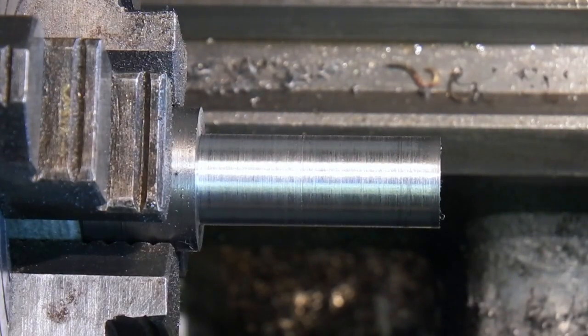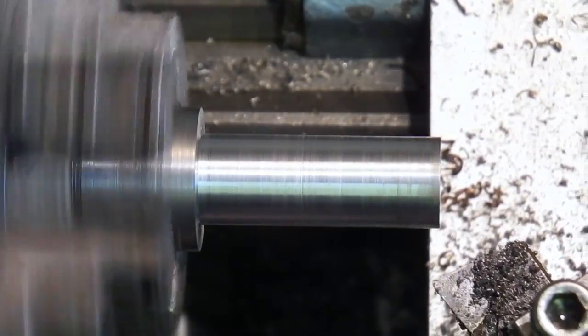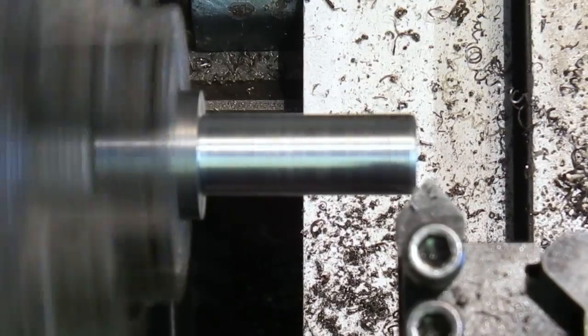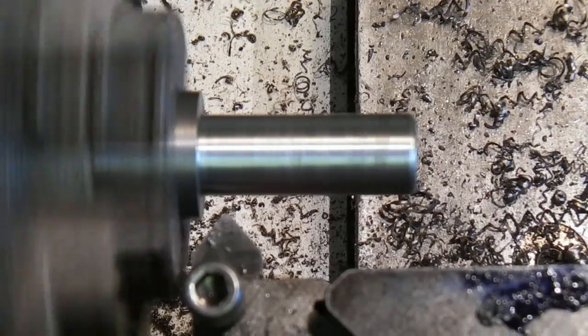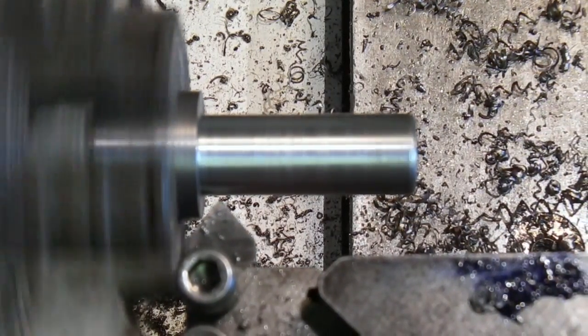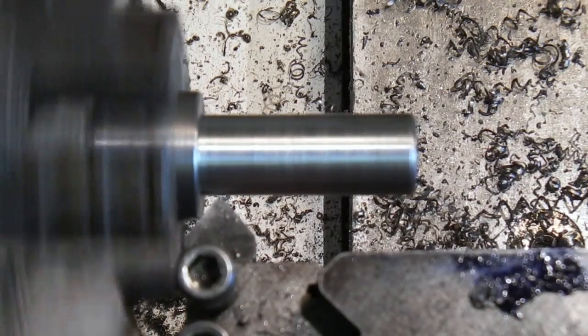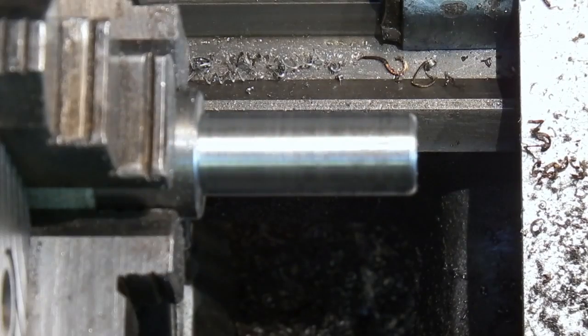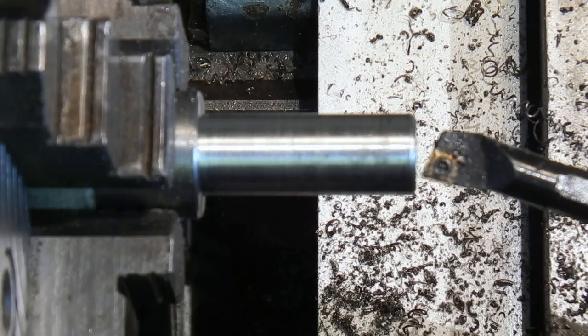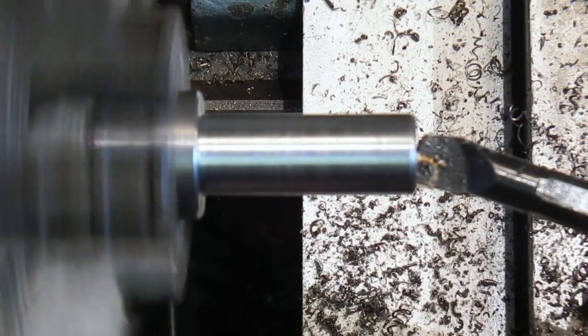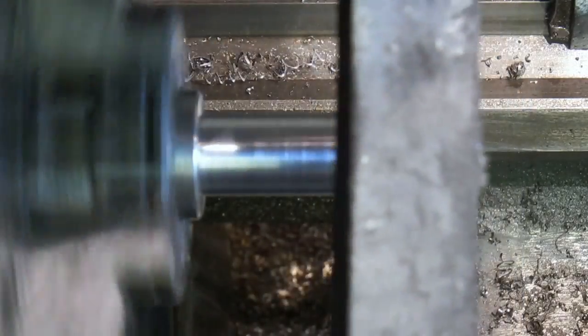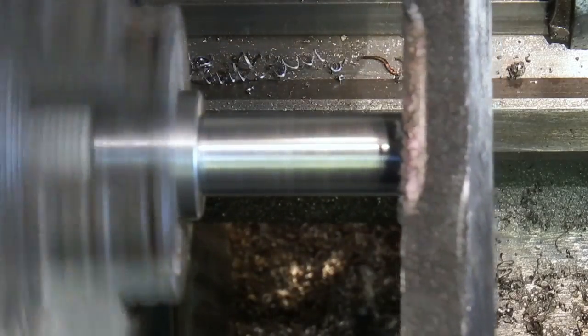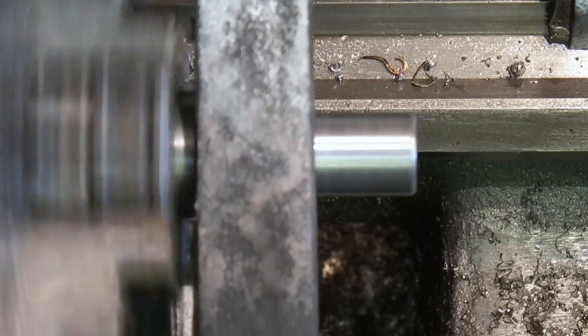All I'm going to do now is put the chamfer on the end, break the sharp top corners. I've tried to put the chamfer tool in. I just hope I can get it in there. Put the chamfer on the end of the bore. I'll just give it a polish and see how that looks.